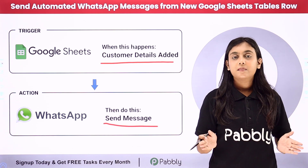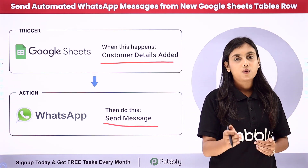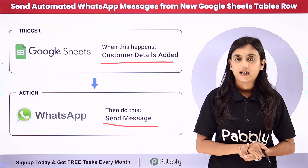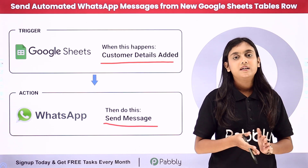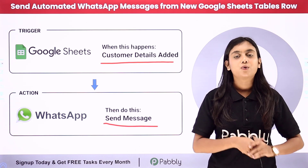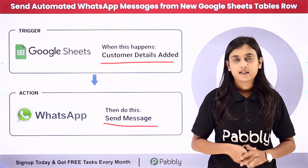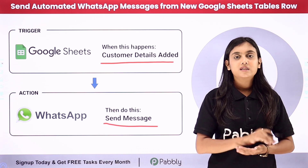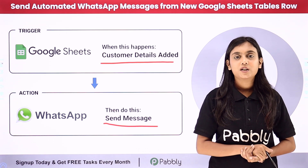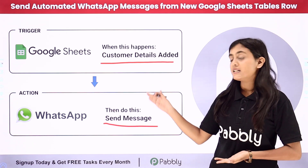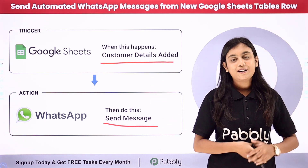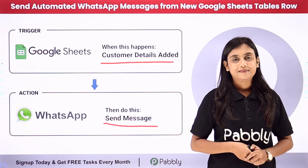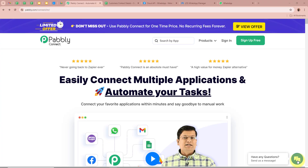We have created a message template using WhatsApp Cloud API. If you want, you can use Vati or Interact to create your own message template. So if you want to learn this amazing automation between Google Sheets and WhatsApp, let me take you all to my screen.